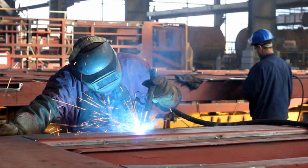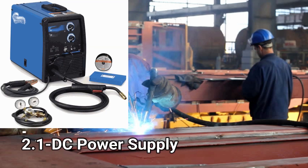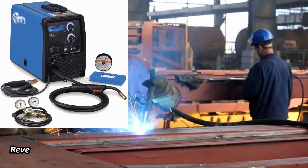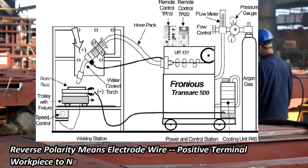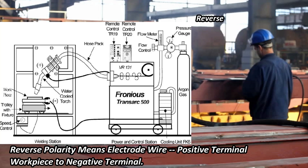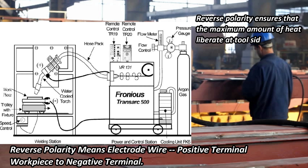In this type of welding process, a DC power supply is used with reverse polarity. Reverse polarity means the electrode wire is connected to the positive terminal and the workpiece to the negative terminal. This is due to the principle of electric circuits which states that 70 percent of heat is always on the positive side. So reverse polarity ensures that the maximum amount of heat is liberated at the tool side, which melts the filler metal properly.